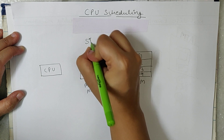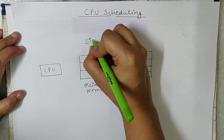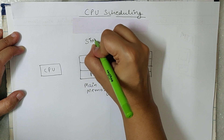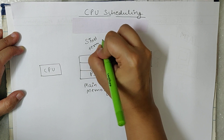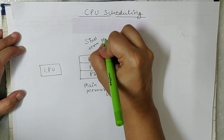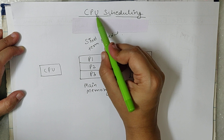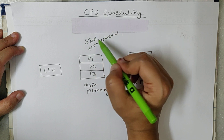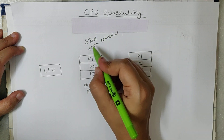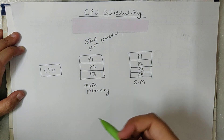So who decides which process — P1, P2, or P3 — will get the CPU? The short-term scheduler decides this. The short-term scheduler is also known as the CPU scheduler.